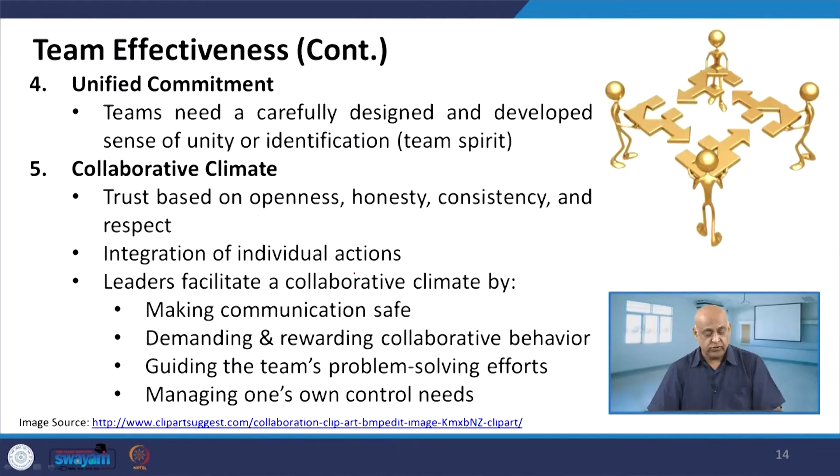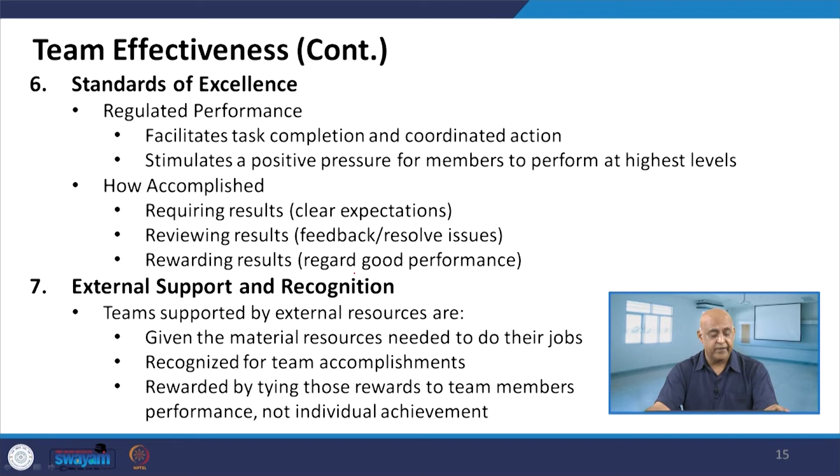Team factors affecting effectiveness include openness, supportiveness, action orientation and positive personal style. The leader has to be very positive towards the team. Core competencies are the ability to do the job well and problem-solving ability. There will be unified commitment — teams need a carefully designed sense of unity or team spirit. Collaborative climate based on openness, honesty, consistency and respect. Collaboration is always required — it is not about one person. A leader cannot do it alone; who is a leader? A leader is one who has followers. This collaborative climate is very much necessary, demanding and rewarding collaborative behavior, and managing one's own control needs is very important.